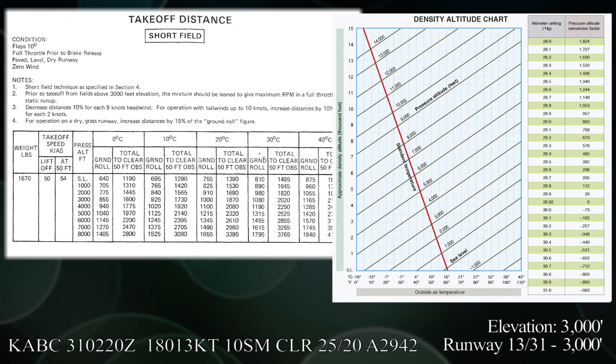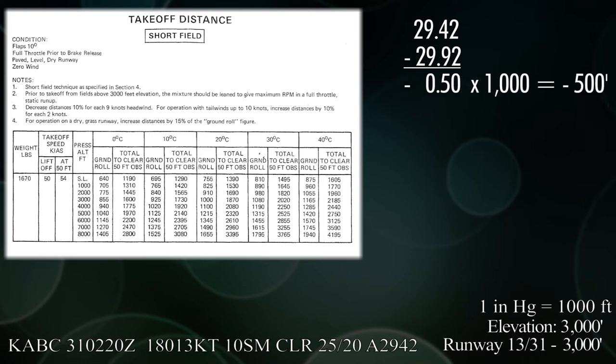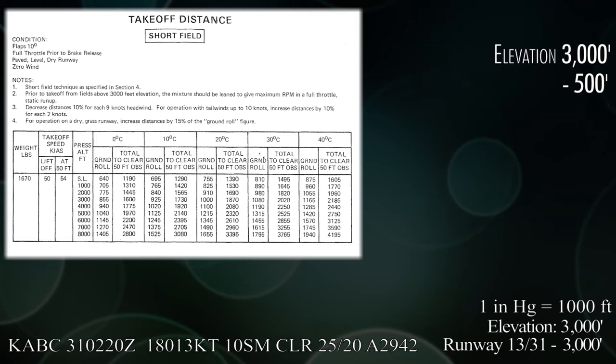A quick rule of thumb is that one inch of mercury equals 1,000 feet. So if you take your 29.42 and you subtract your altimeter, yes do it in that order, take your altimeter minus 29.92, you'll end up with minus 0.5 and if you multiply that by a thousand, you have minus 500 feet. In other words, you have to take your elevation and subtract 500 feet from it and voila, look at that, you have your pressure altitude of 2,500 feet.